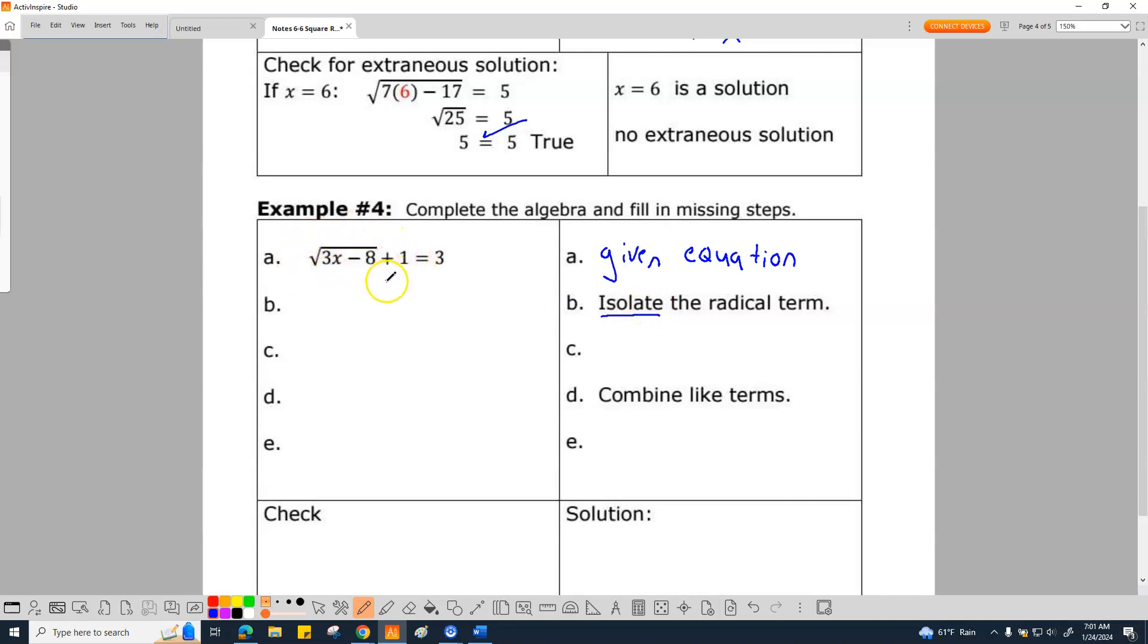And this is the radical term. So, we're going to move the one over on this side. So, when I get down here, I should have square root of three X minus eight equals, because that one is gone now, equals what is three minus one? Two. So, we got that.